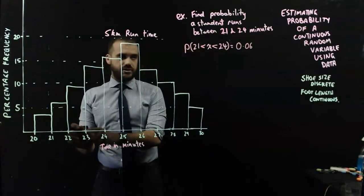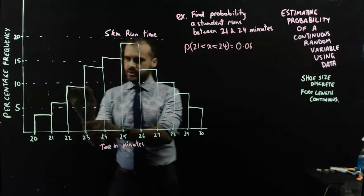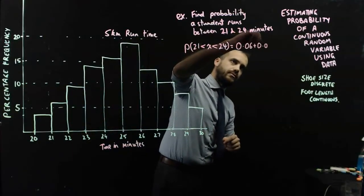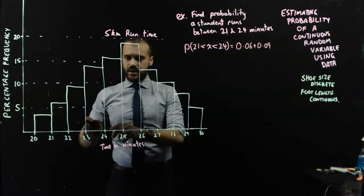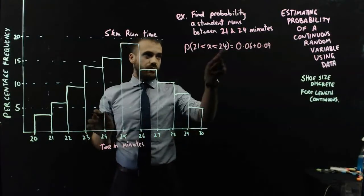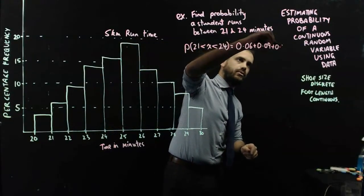Now, any student in here is running between 22 and 23, which is still within my boundary, so I'm going to count those ones as well, so that's 0.09. And then anyone here is running between 23 and 24 minutes, which is within my bound, and that's 0.14.